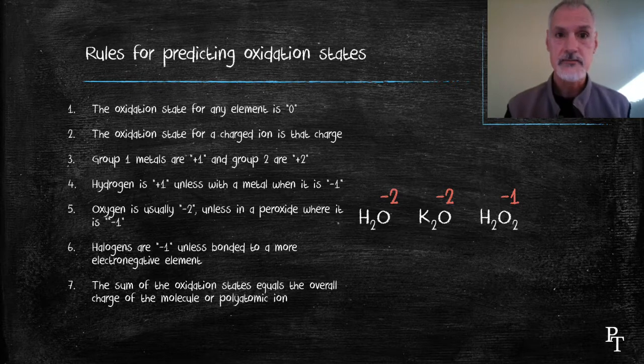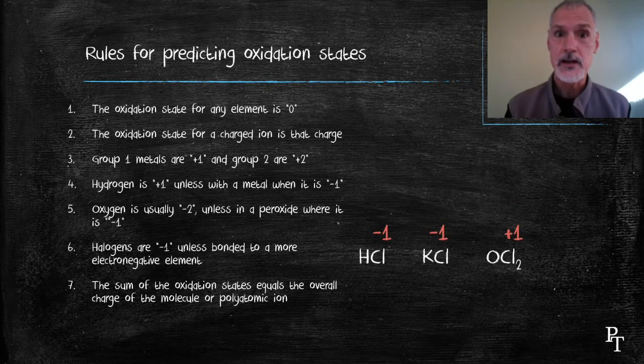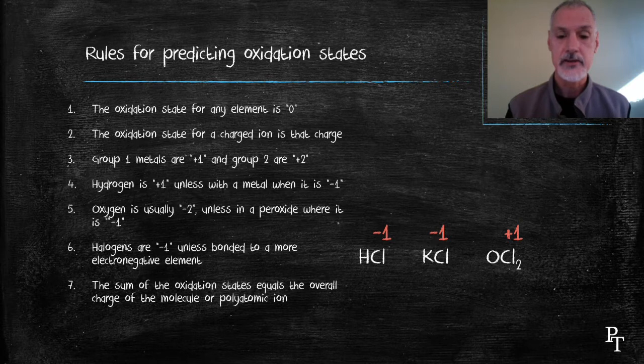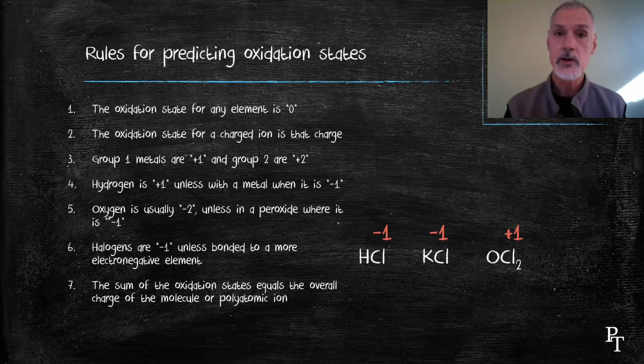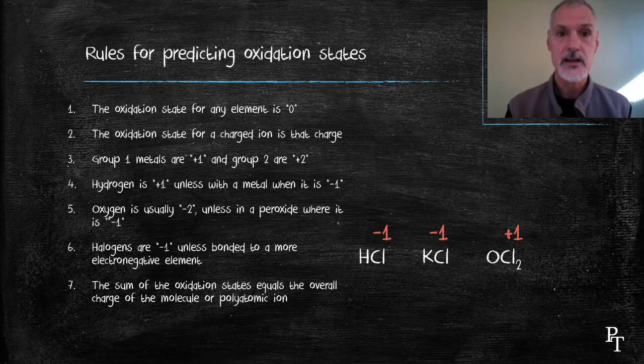Halogens generally have a charge of minus one unless combined with a more electronegative element. And in my last example here, oxygen dichloride, oxygen is more electronegative than chlorine. As a result, chlorine doesn't have that minus one charge.